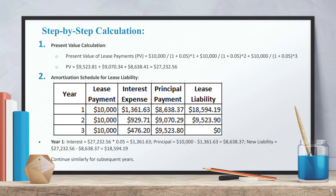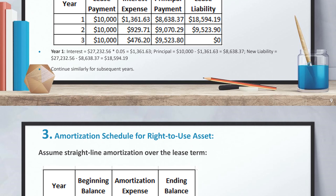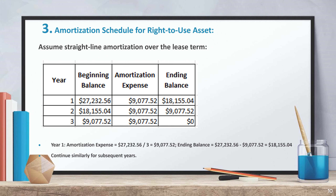The new liability equals $27,232.56 minus $8,638.37, which equals $18,594.19. Continue similarly for subsequent years. For the amortization of the right-to-use asset, assume straight-line amortization over the lease term. Year one amortization expense equals $27,232.56 divided by 3, which equals $9,077.52.